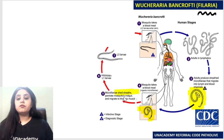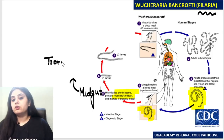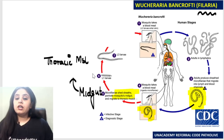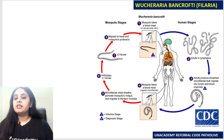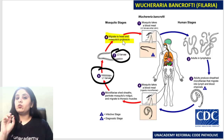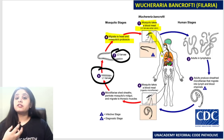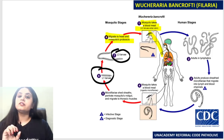Once the mosquito takes up the microfilaria, the sheath is shed off inside the mosquito. The microfilaria then goes into the mosquito's midgut, penetrates through it, and enters the thoracic muscle of the mosquito. There the L1 larva develops, which further develops into L3 larva. The L3 larva then migrates to the head and neck region, blocking the mosquito's proboscis. When the mosquito next takes a blood meal, it regurgitates that L3 larva into our skin because the proboscis is totally clogged.